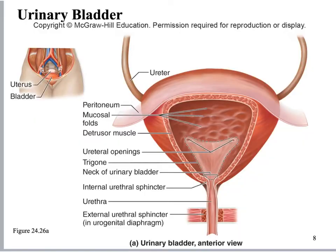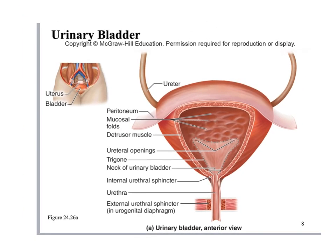The ureters then enter the bladder. The bladder is a muscular container. Both the ureter and the bladder have transitional epithelium covering the interior lumen — the mucosa — in order to protect the underlying cells from the urine inside. The bladder has a distinct muscle called the detrusor muscle, which will contract and normally push urine out through the urethra.